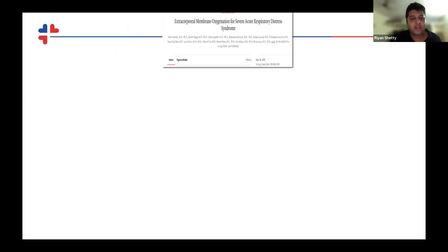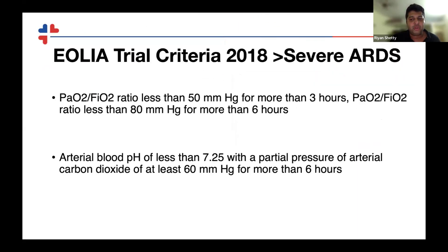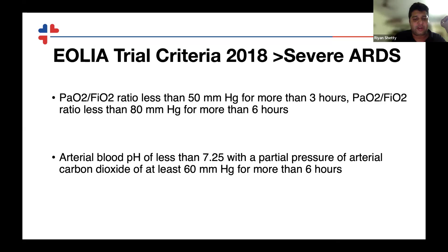In another trial called the EOLIA trial, they used a definition of severe ARDS as a PaO2/FiO2 ratio less than 50 mmHg for 3 hours, or less than 80 for more than 6 hours as an oxygenation criterion; and as a hypercapnia criterion, arterial blood pH less than 7.25 or PaCO2 at least 60 for more than 6 hours. This was used in the 2020–21 trial from a group in Paris.